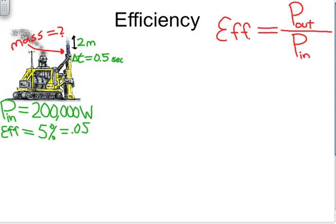So let's do that. Efficiency 5%, so that's 0.05, equals the output power which we are trying to find, and I'll label simply as P here, divided by the input power which is 200,000 watts.